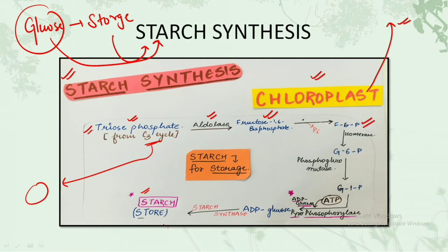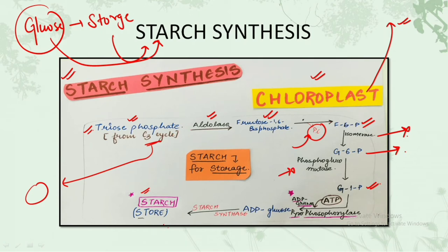This fructose 1,6-bisphosphate, after conversion by aldolase, gets converted into fructose 6-phosphate by the elimination of one phosphate ion. Now this fructose 6-phosphate isomerizes by the help of the enzyme isomerase into glucose 6-phosphate. Then glucose 6-phosphate gets converted into glucose 1-phosphate by the enzyme phosphoglucomutase.